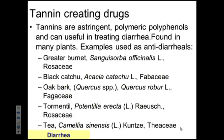Now let's move on to our tannins. Tannins are very large complex polymeric polyphenols found in many, many plants. We have tannins in plants here on campus — if you go into the quad and look at some of the oak tree species, those are super rich in tannins. Some examples of plants used as antidiarrheal agents because of their rich tannin content include the greater burnet, Sanguisorba officinalis, found in the rose family. You also have black catechu found in the Fabaceae.